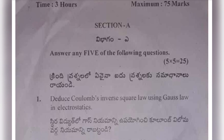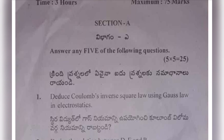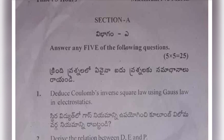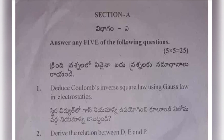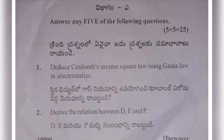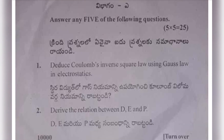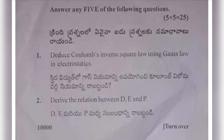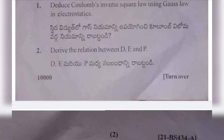First short question: derive Coulomb's inverse square law using Gauss's law in electrostatics. Second one: derive the relation between D, E, and P.